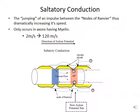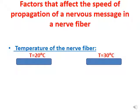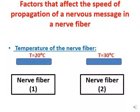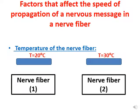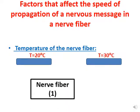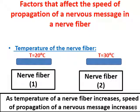Saltatory conduction is the jumping of an impulse between the nodes of Ranvier in a myelinated axon. This dramatically increases the speed of propagation — it only occurs in axons with myelin and increases speed from 2 meters per second to about 120 meters per second, about 60 times faster. Regarding temperature: as temperature increases (e.g., from 20°C to 30°C), the speed of propagation of the nervous message increases as well.